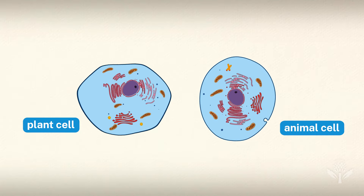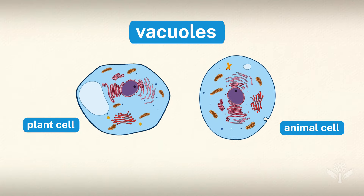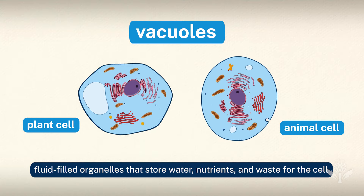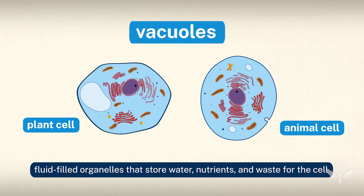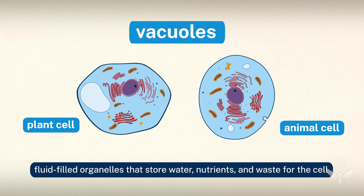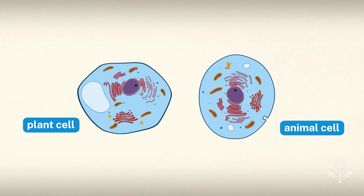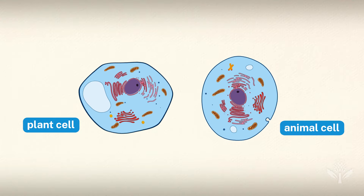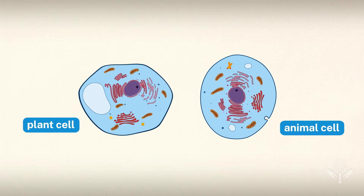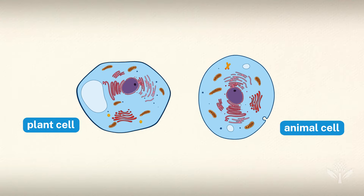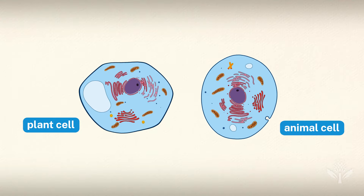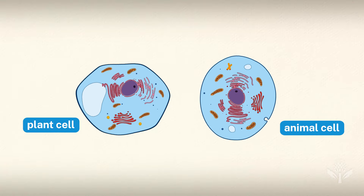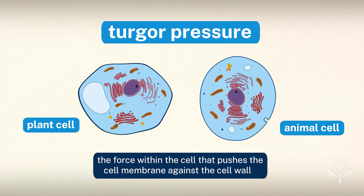Plant and animal cells also both have vacuoles, fluid-filled organelles that store water, nutrients, and waste for the cell. While animal cells have multiple, smaller vacuoles, plant cells can be identified by their large singular vacuole that, when properly filled with fluid, keeps the plant from wilting by providing turgor pressure.